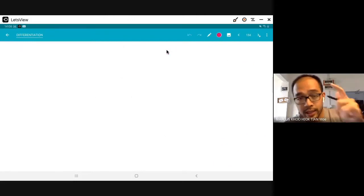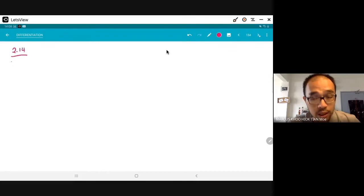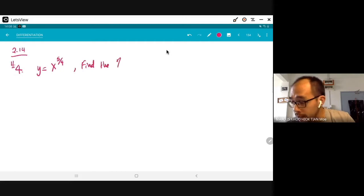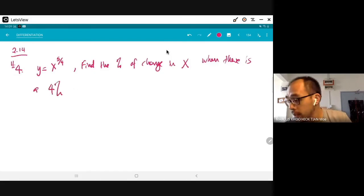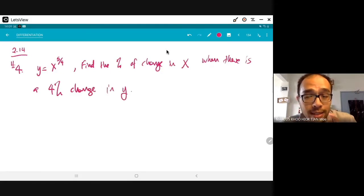So I didn't really want to cover this question yesterday because it involves another extra step now. You have to think about the percentage, get the del y, and then count the percentage one more time. But I still want to introduce to you this particular question because it's very important. So I want you to try the self-exercise 2.14, question number 4. Just try it for me. So you have y equals to x power of 5 over 4. Be careful with this differentiation. It says, find the percentage of change in x when there is a 4% change in y.